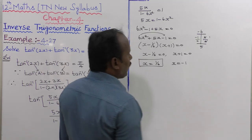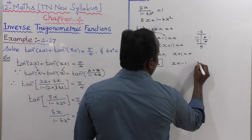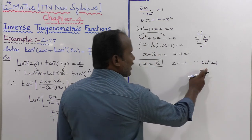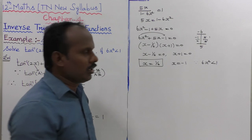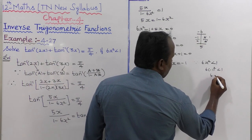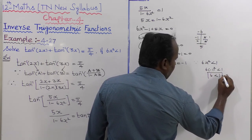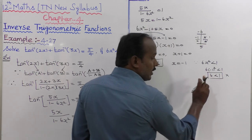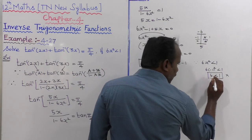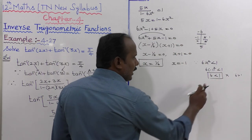The solution x equals minus 1 is not applicable for the given condition. Substituting x equals minus 1 into 6x squared less than 1 gives 6 times (minus 1) squared equals 6, which is not less than 1. Since 6 is greater than 1, this inequality is violated, so x equals minus 1 is rejected.